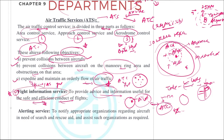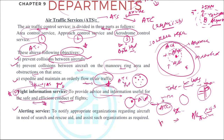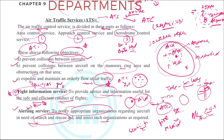Next is the alerting service. This applies in events when an aircraft goes missing or some accident happens at the airport. They have to notify other organizations — for example, contacting the fire department, the medical team, and coordinating with the security team. They have to notify appropriate organizations regarding aircraft in need of search and rescue and assist such organizations as required.